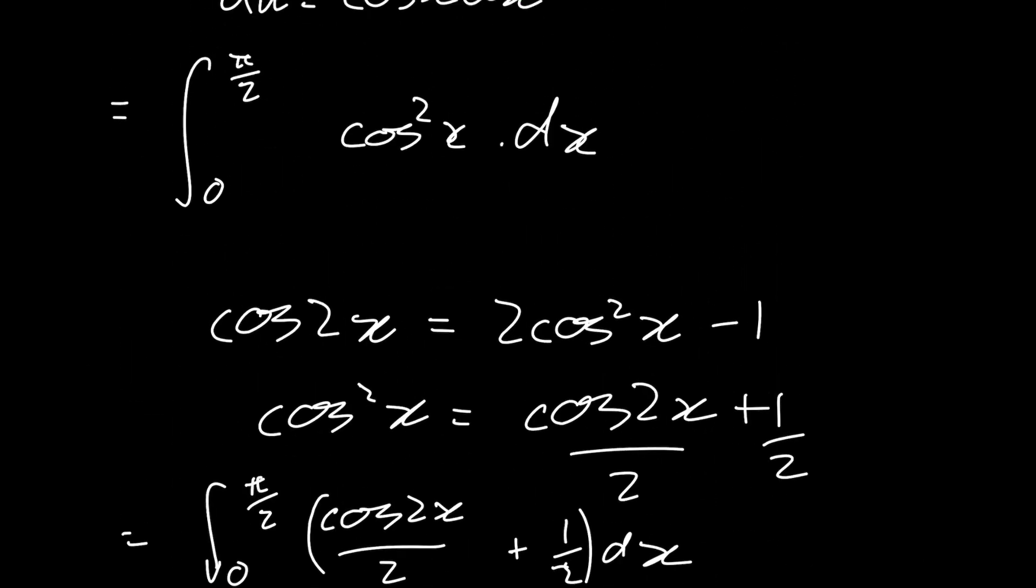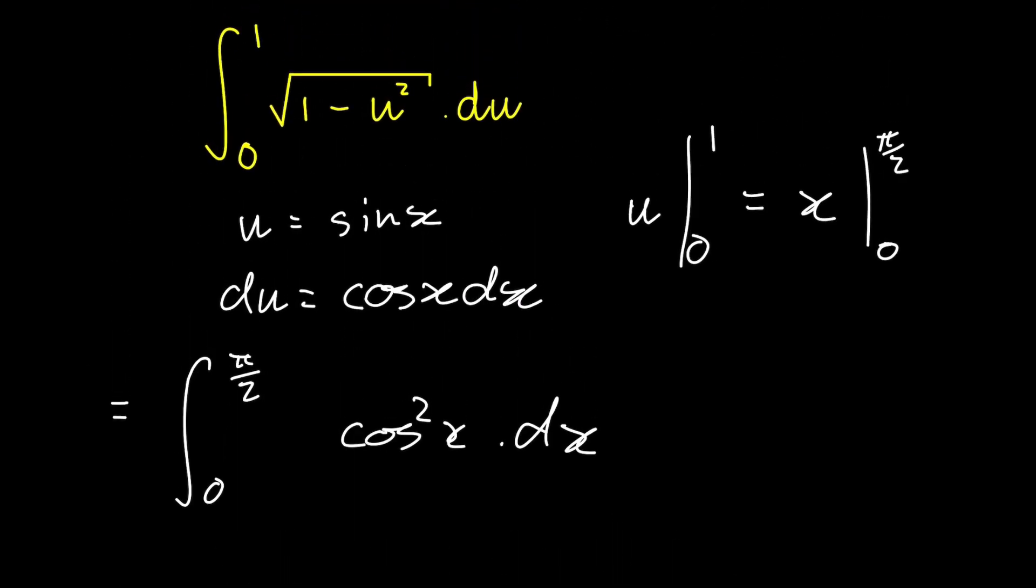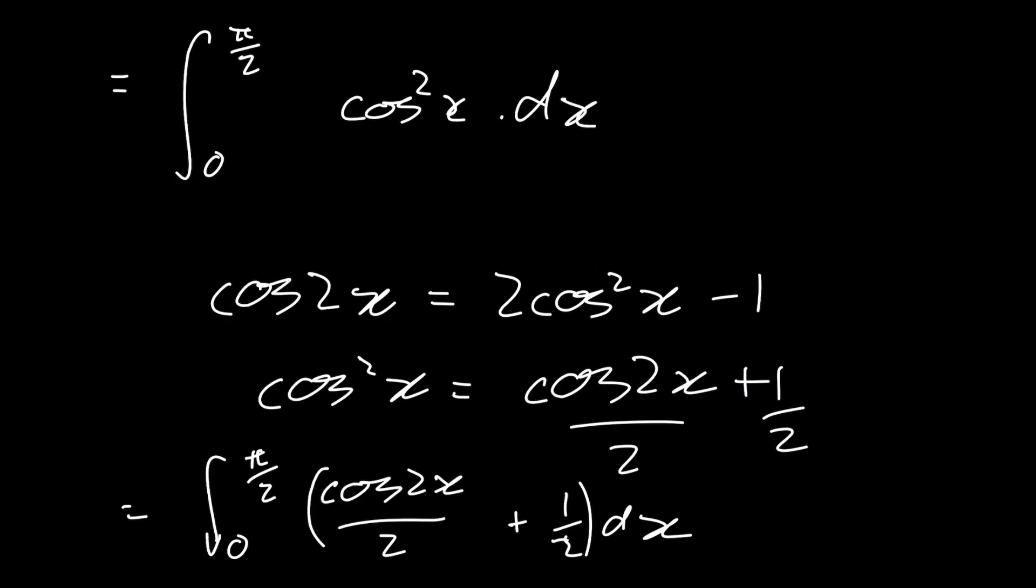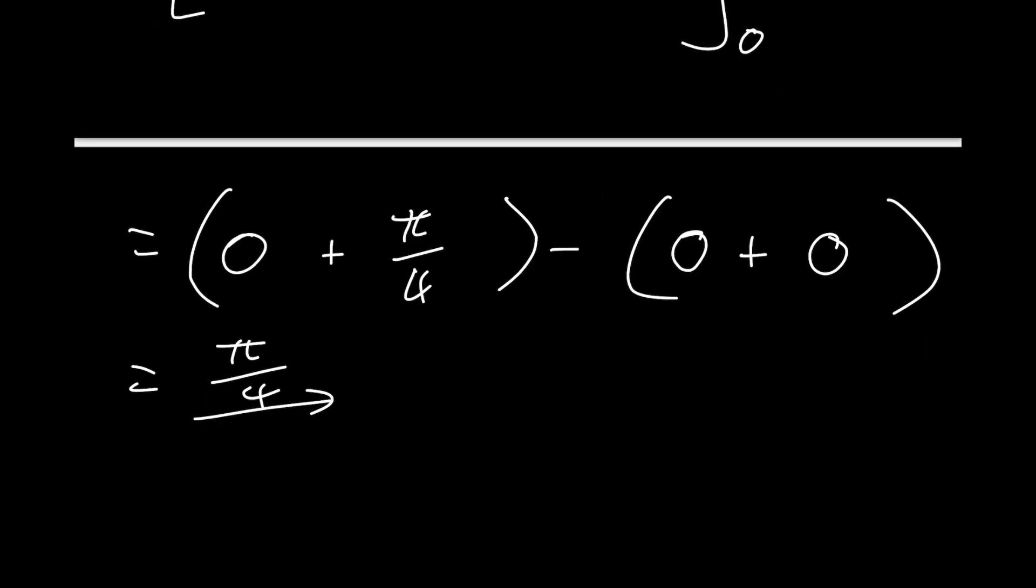So the solution to the initial integral from 0 to 1 of the square root of 1 minus u squared du is equal to pi by 4. So I hope you found this video useful and I hope it cleared up trig substitution for you as a means or a technique of integration. And if you found this video useful, please don't forget to leave it a like and subscribe to my channel. There's still many days left in the countdown, and you don't want to miss the end.